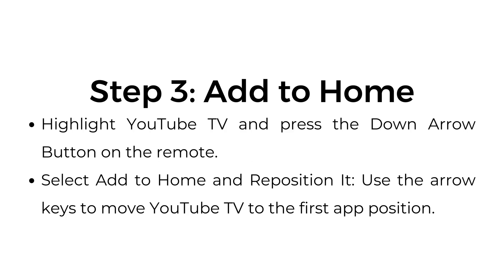Step number three: Add to Home. Highlight YouTube TV and press the down arrow button on the remote. Select Add to Home and reposition it. Use the arrow keys to move YouTube TV to the first app position.